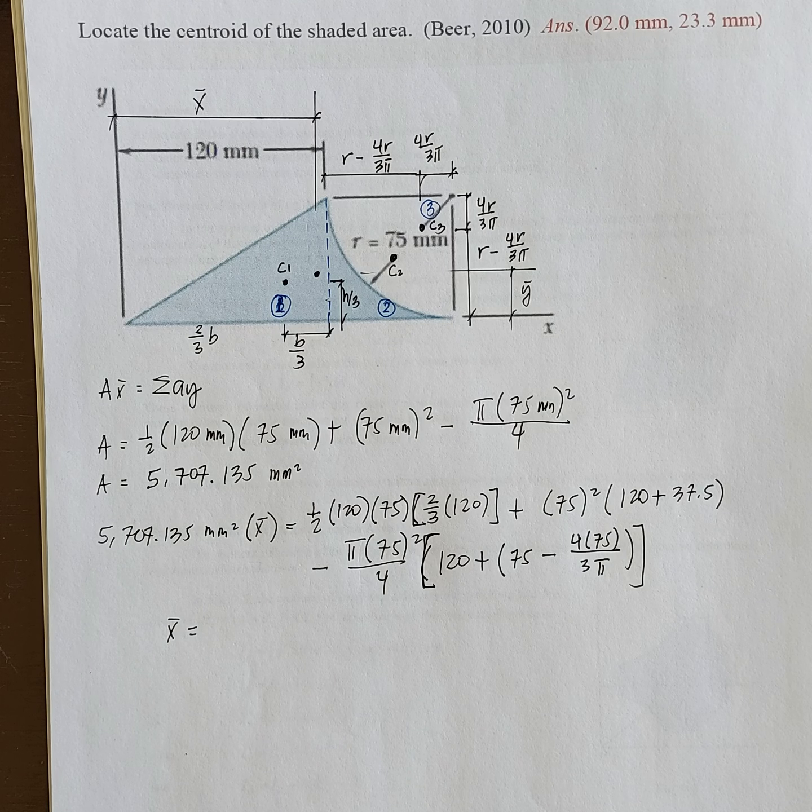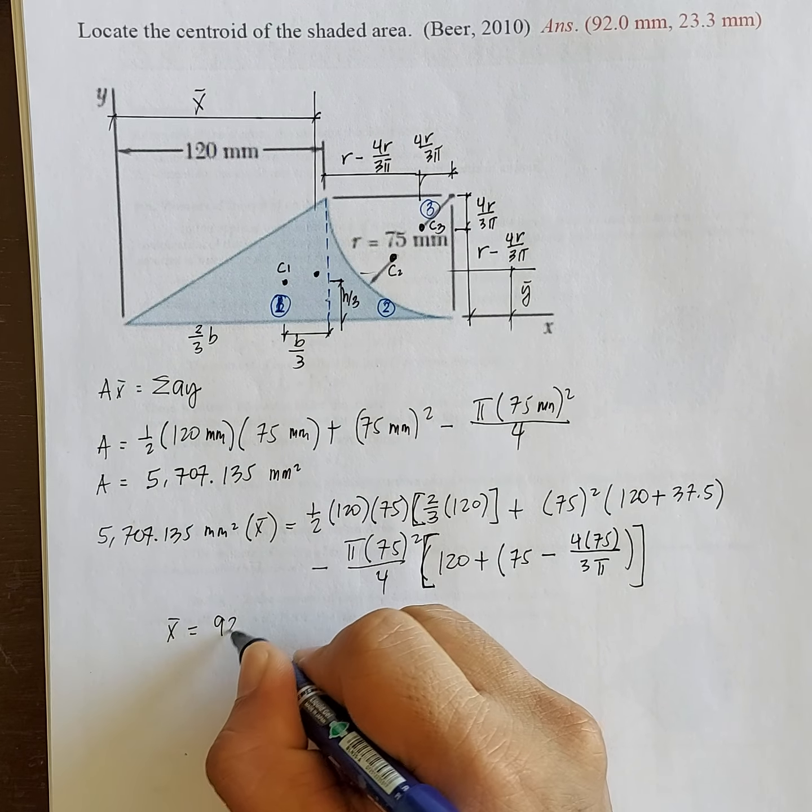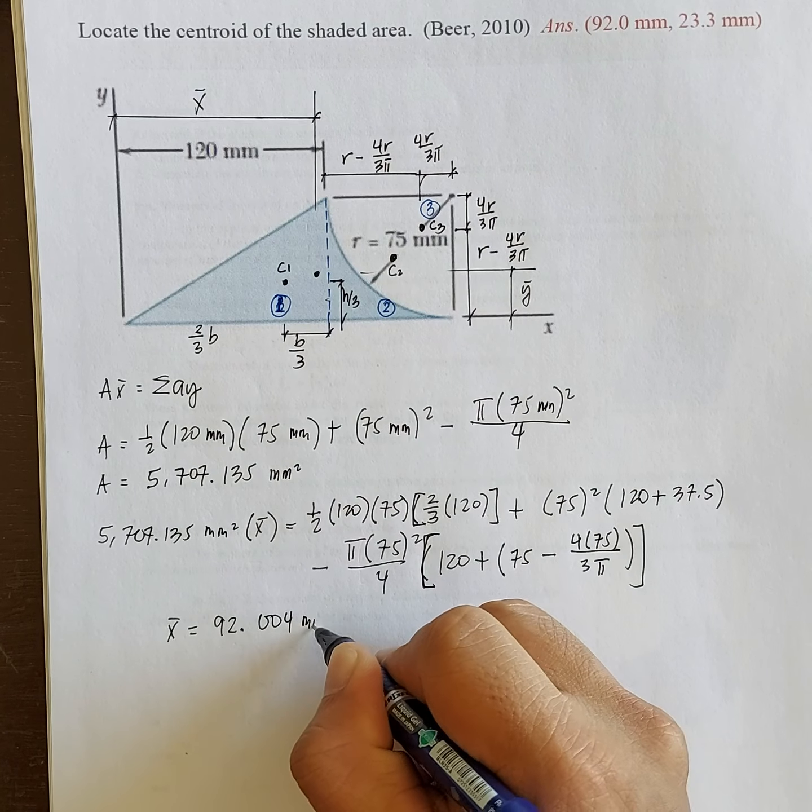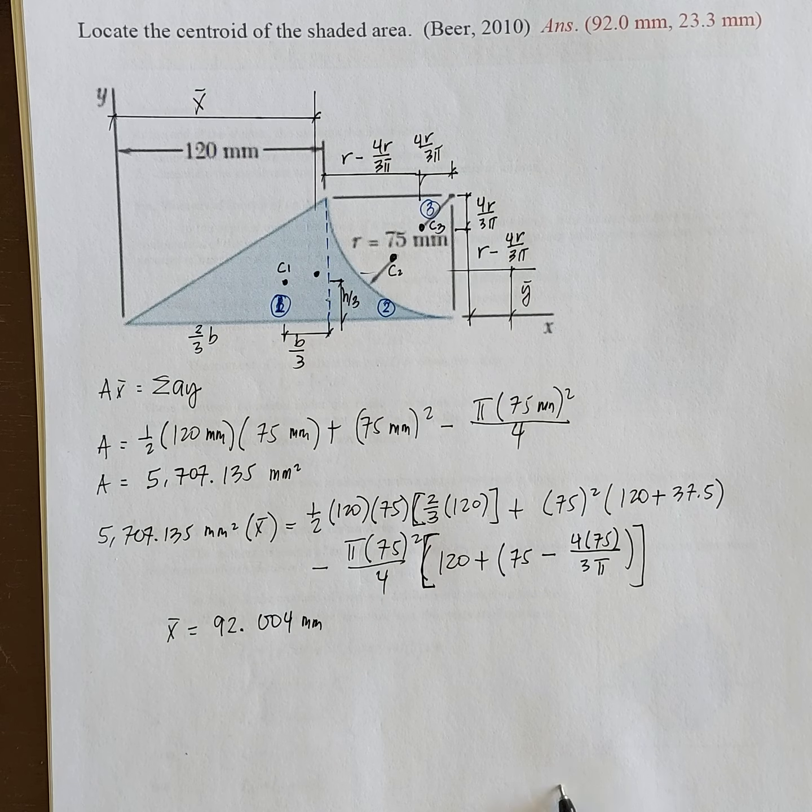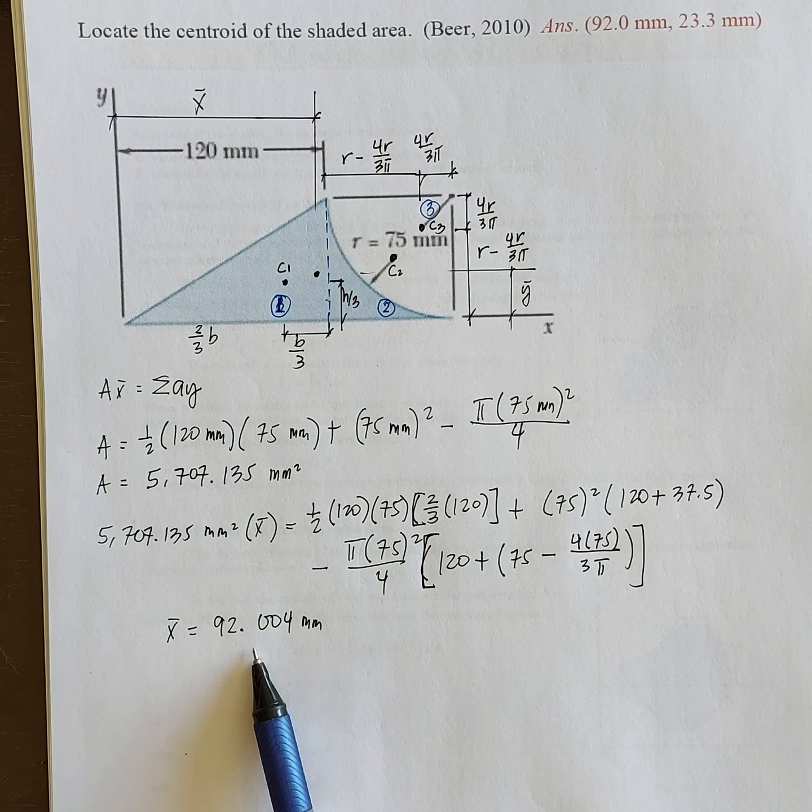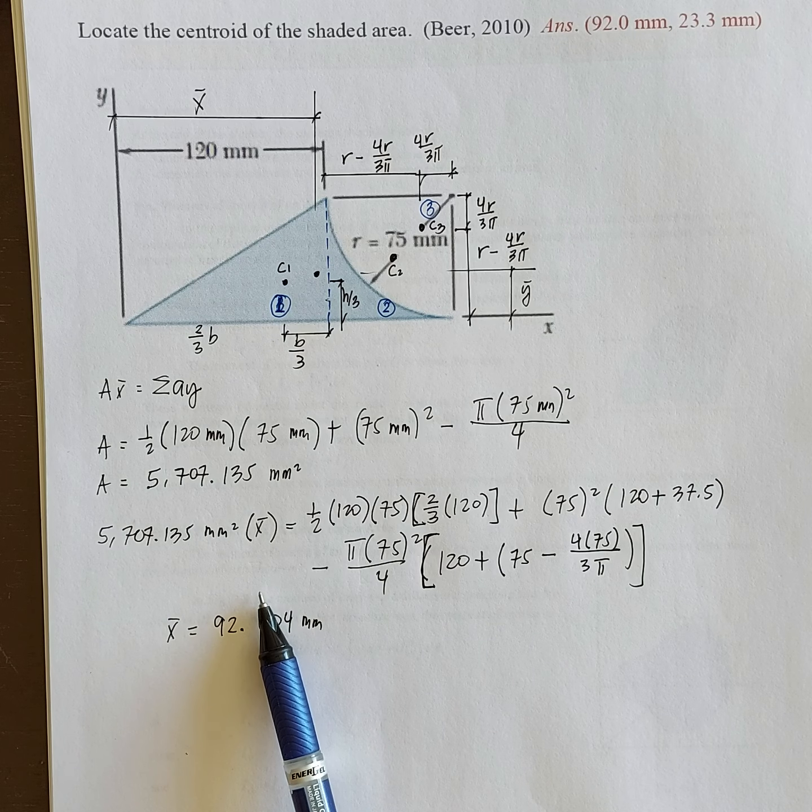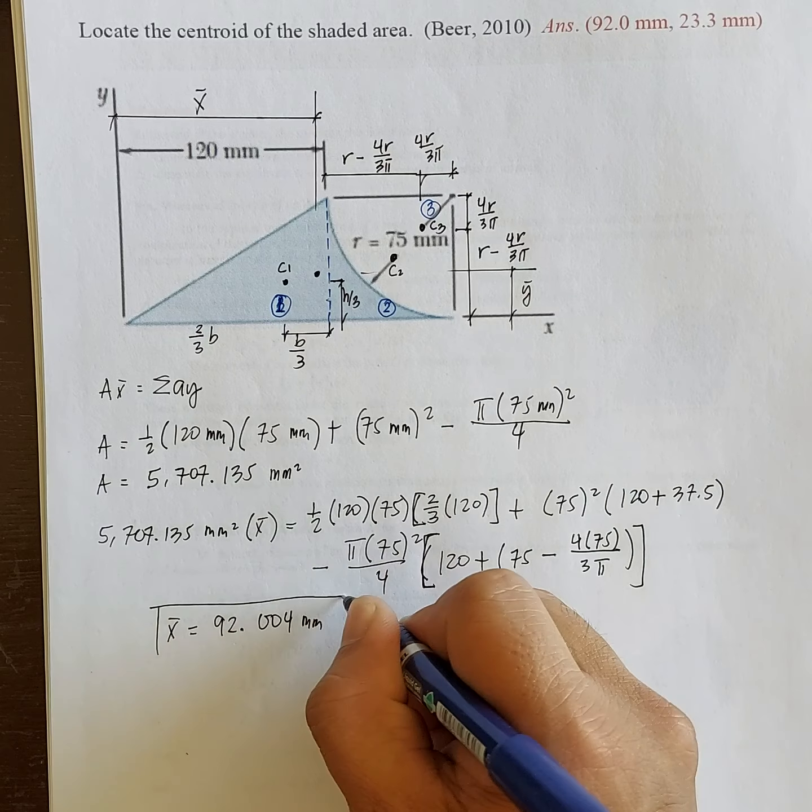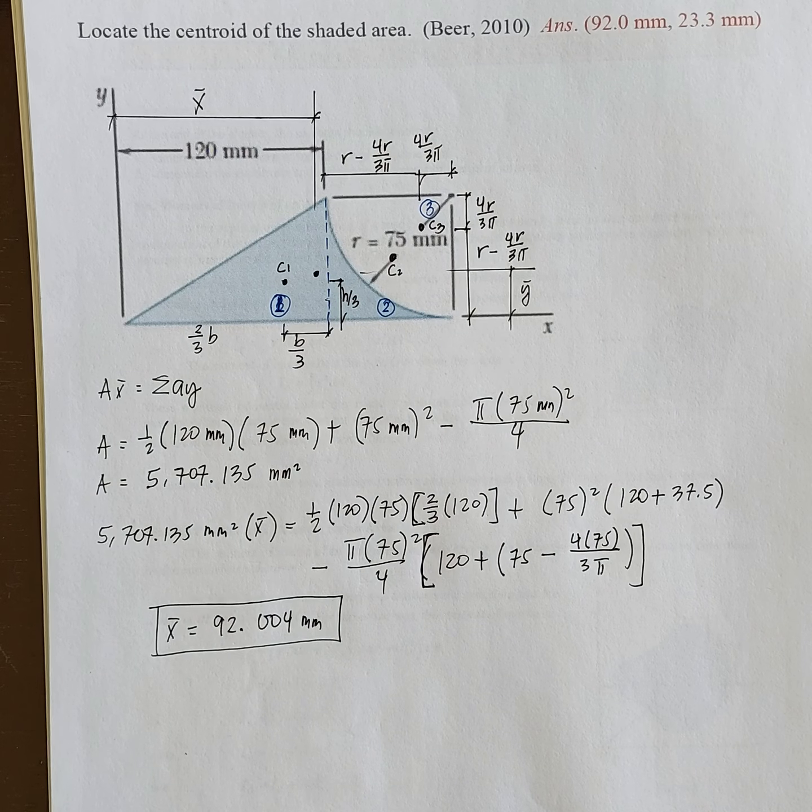So the answer is x-bar is 92.004 millimeters. So the same as the answer in the module. May konting discrepancy because of the rounding of values. So this is x-bar.